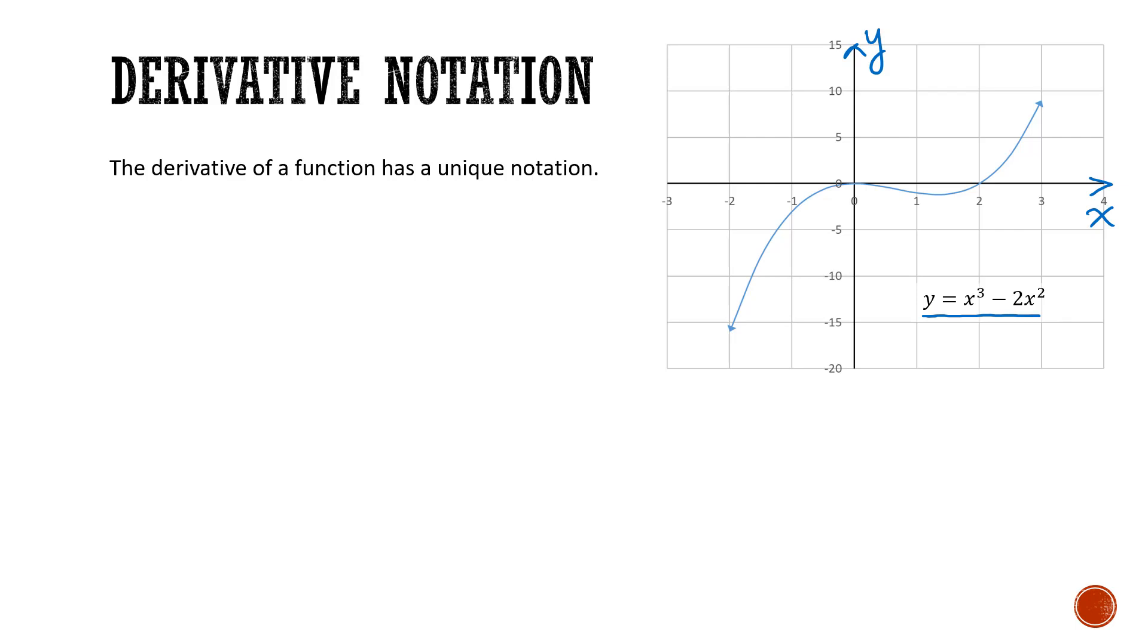And when we're talking about a slope or the derivative, we're going to be talking about how y changes in relation to x. So whenever we're working with derivatives, we start with what the function is. It's y is equal to x cubed minus 2x squared.